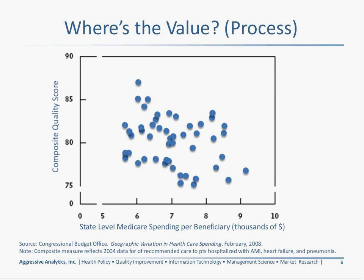One of the more telling charts looks at a composite measure for recommended care for patients hospitalized with acute myocardial infarction, heart failure, and pneumonia. On the x-axis is state-level Medicare spending per beneficiary; on the y-axis is the composite quality score. There's basically a negative relationship. A major paper from the Medicare Payment Advisory Commission around 2007 stated that fee-for-service payment systems had a neutral if not negative effect on quality — meaning we were paying for the wrong things. An IOM report around 2005 concluded that for the sizable investments we make in healthcare, we should be getting much greater value for the dollar.